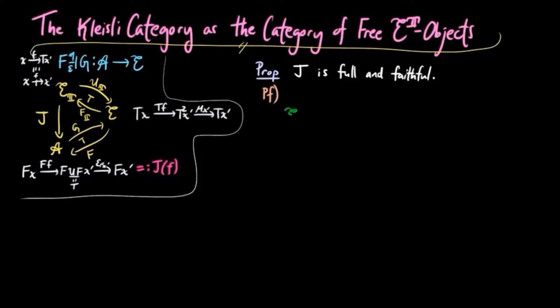For arbitrary objects x and x prime in E, the Hom set of morphisms in the Kleisli category from x to x prime is by definition the set of morphisms from x to gf x prime in E, since t is equal to gf.